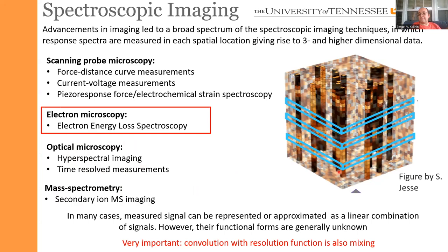In all these cases the basic data primitive looks like a cube: we explore the x and y image plane, then a vertical direction representing our energy axis — energy loss for EELS, mass for mass spectrometry, or wavelength for photoluminescence. Importantly, in the image plane our data is sampled on a rectangular grid, which means the analysis workflows we consider will be absolutely universal across all these cases.